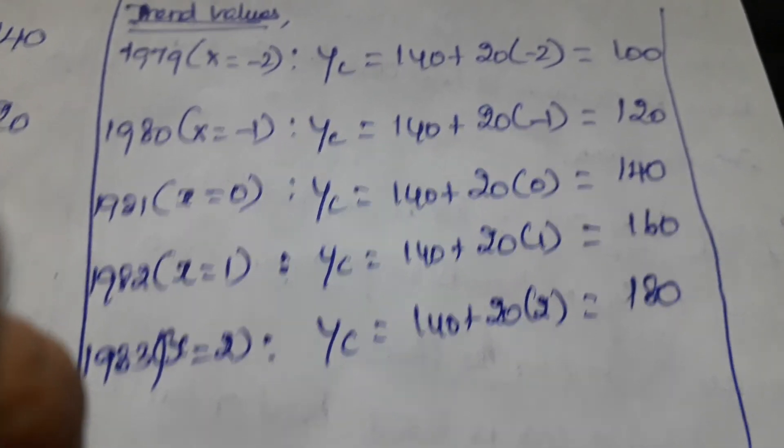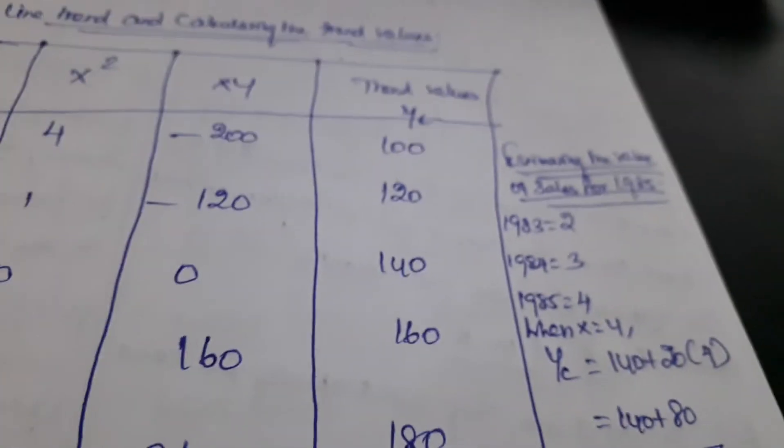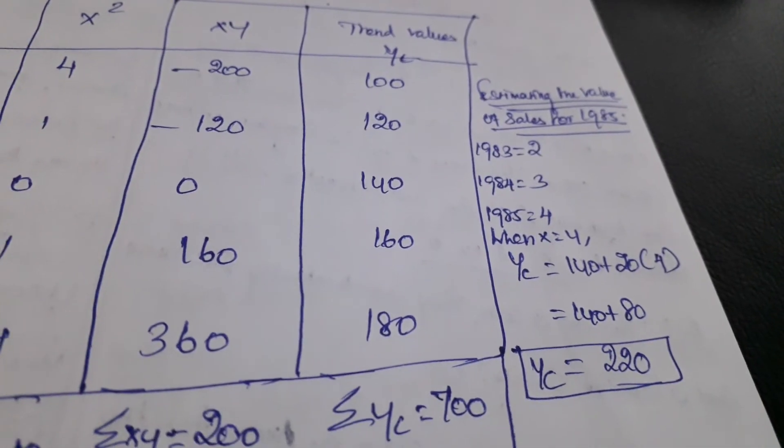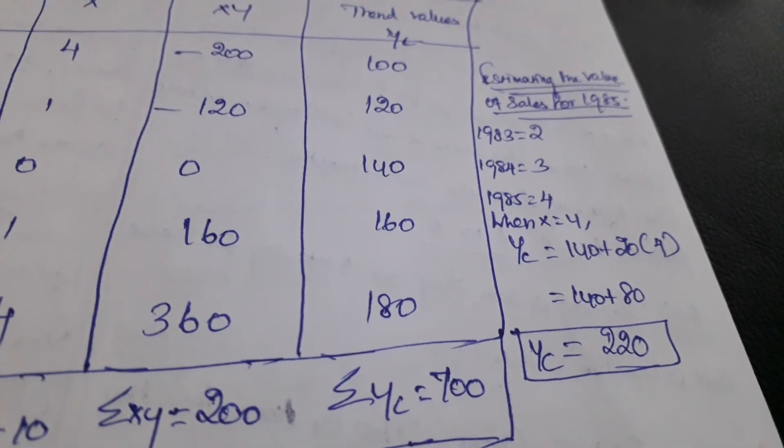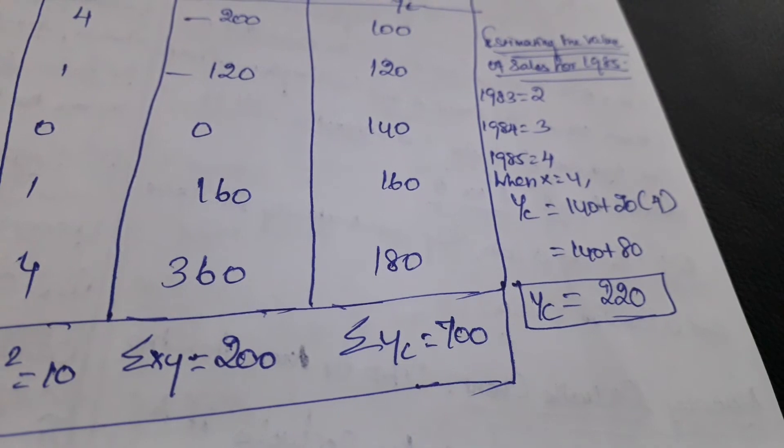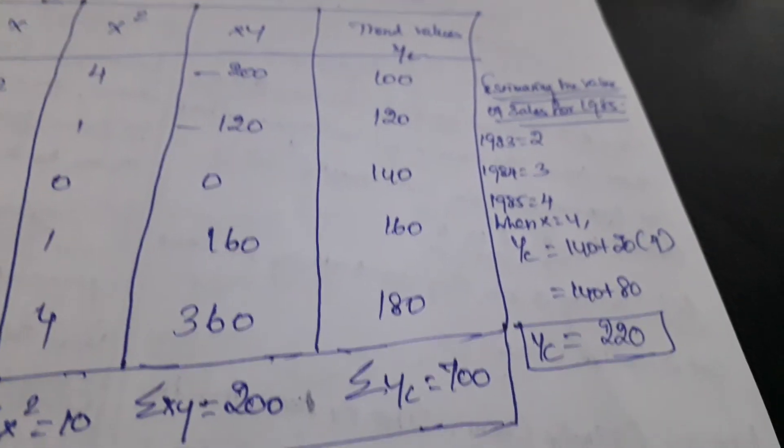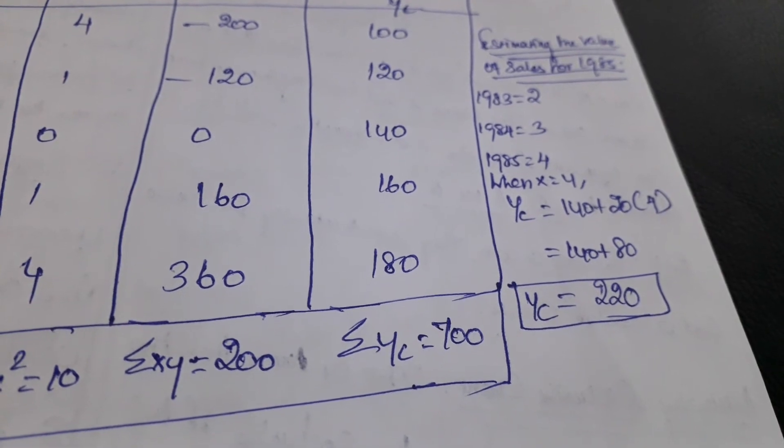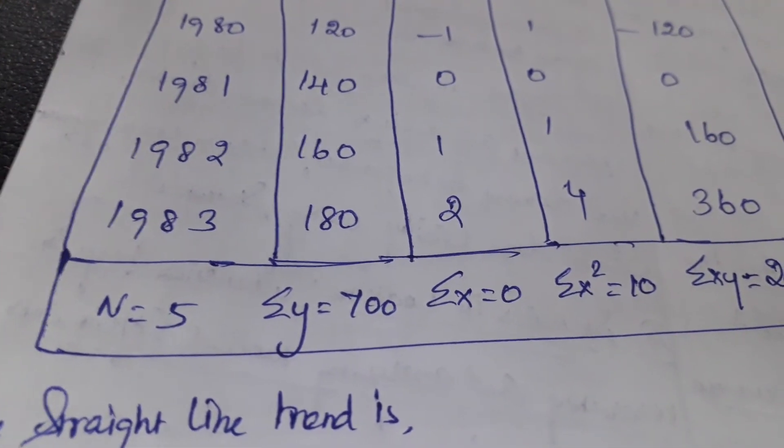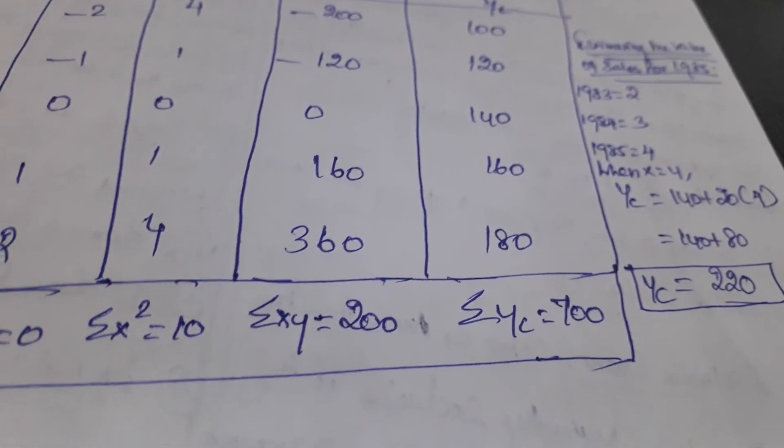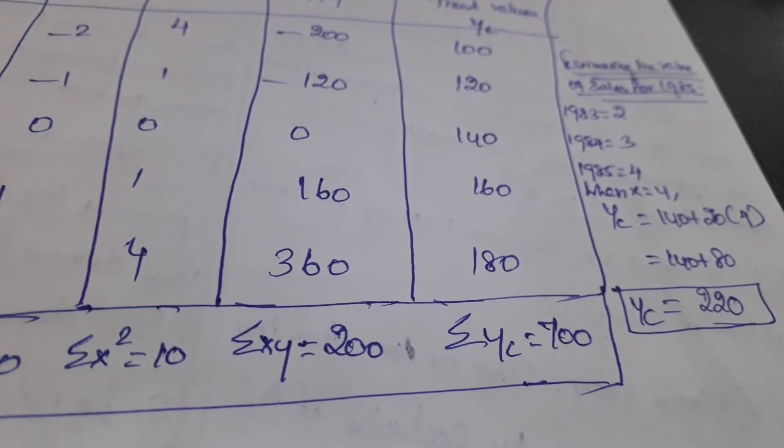These values we apply in the table under the heading 'Trend Values'. Then we total them. Summation of Y equals 700. This value should equal the sales value. Summation of Y should equal summation of Yc. This is how we check if our answer is correct.